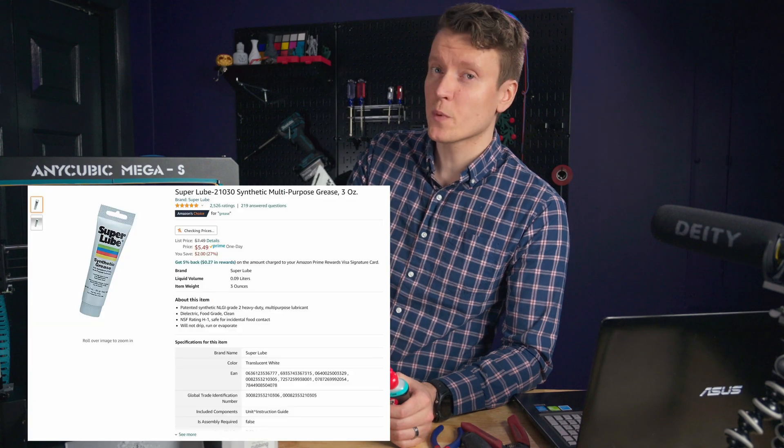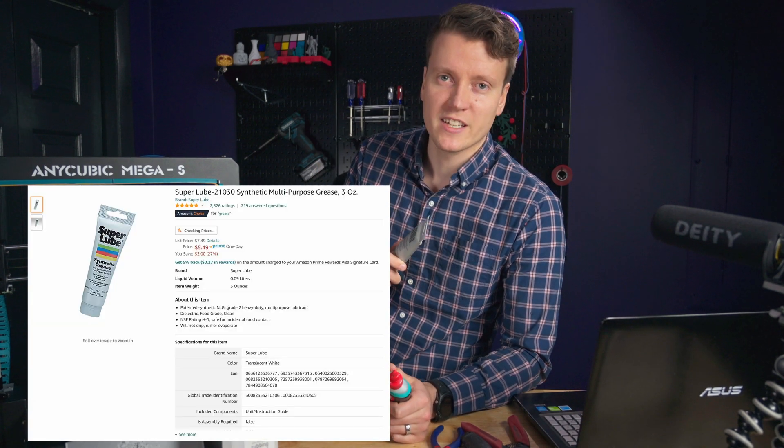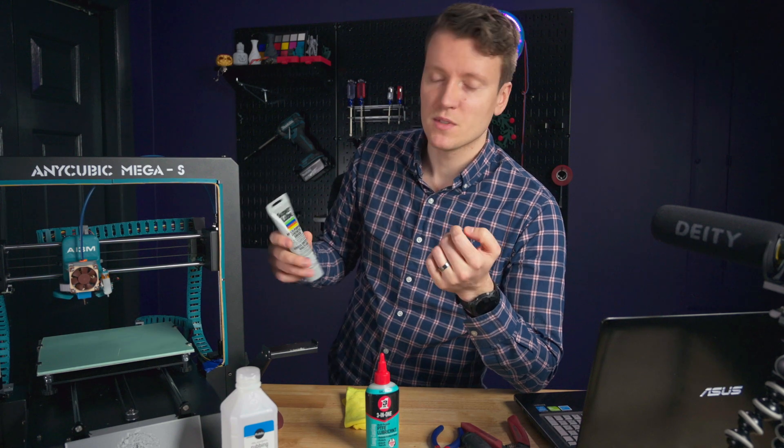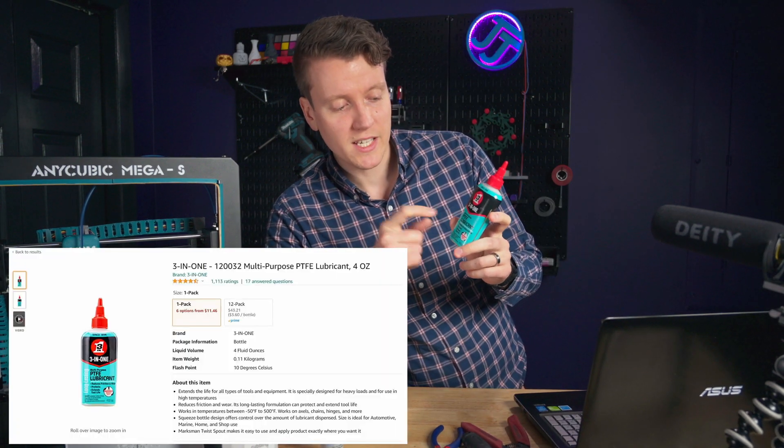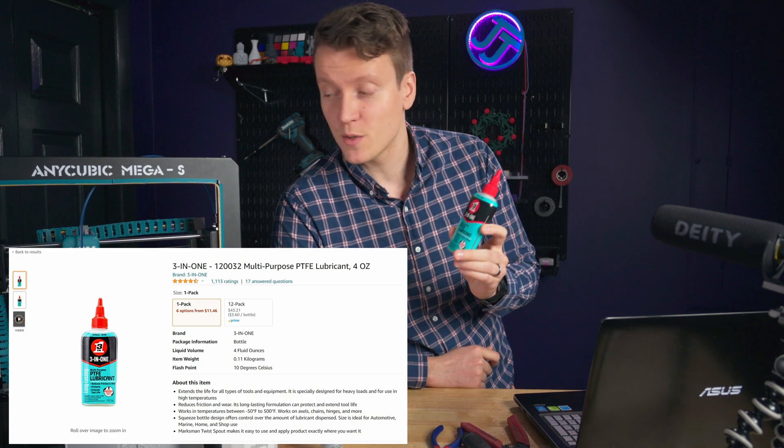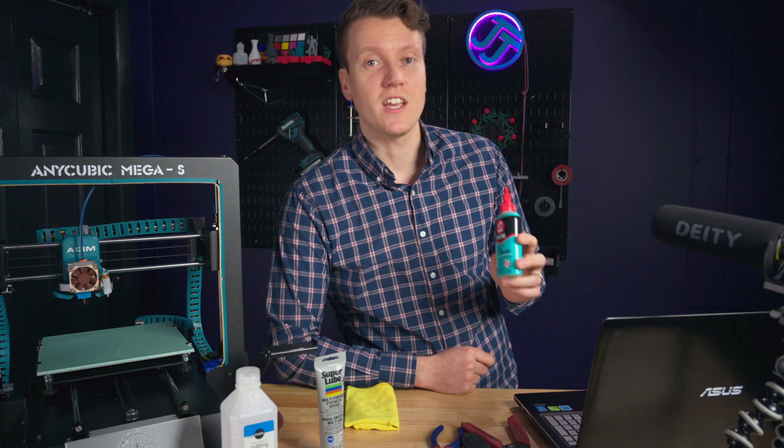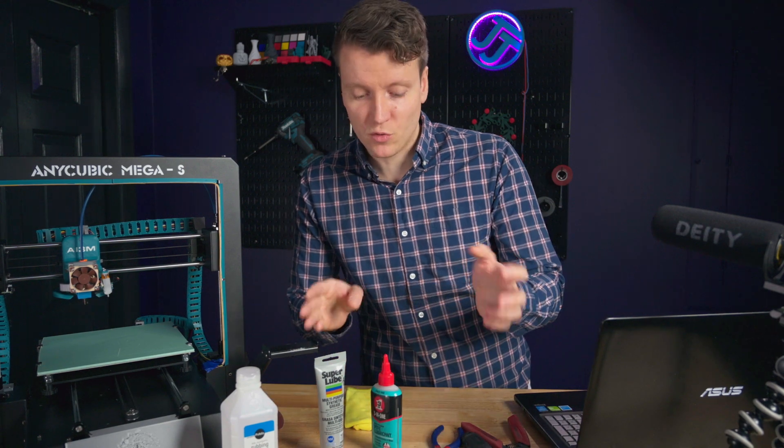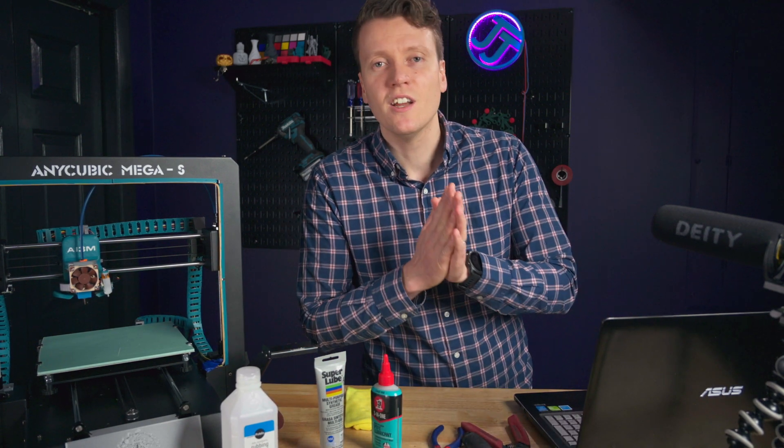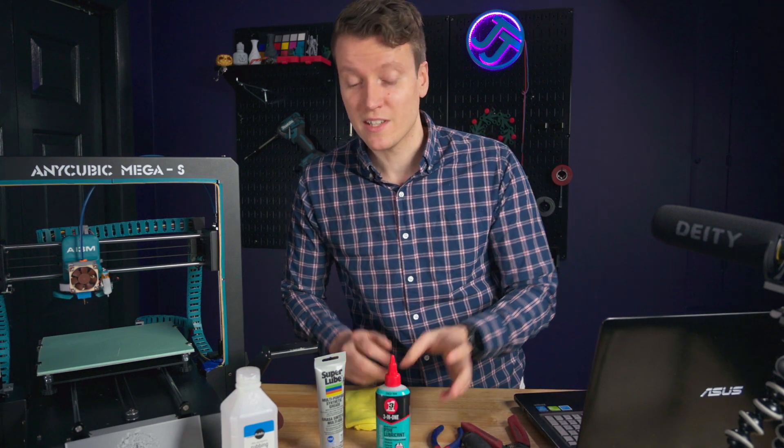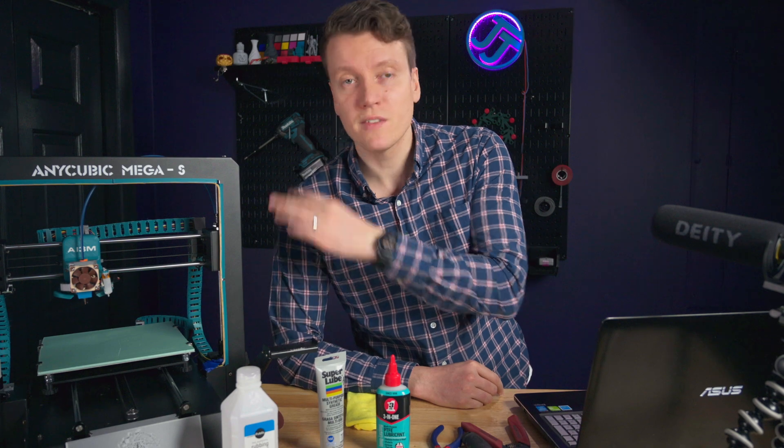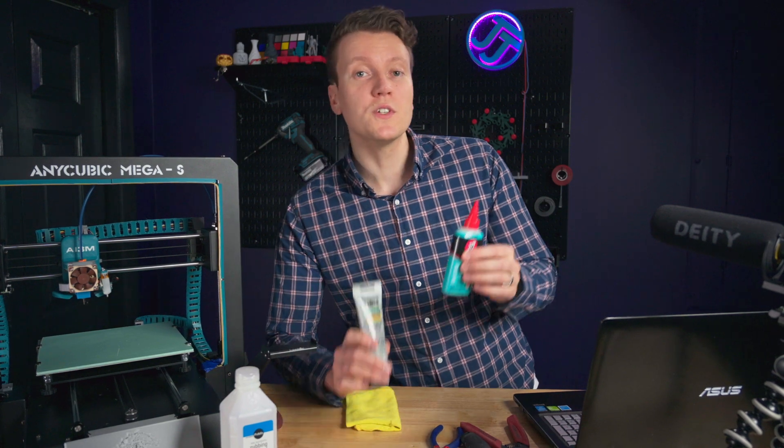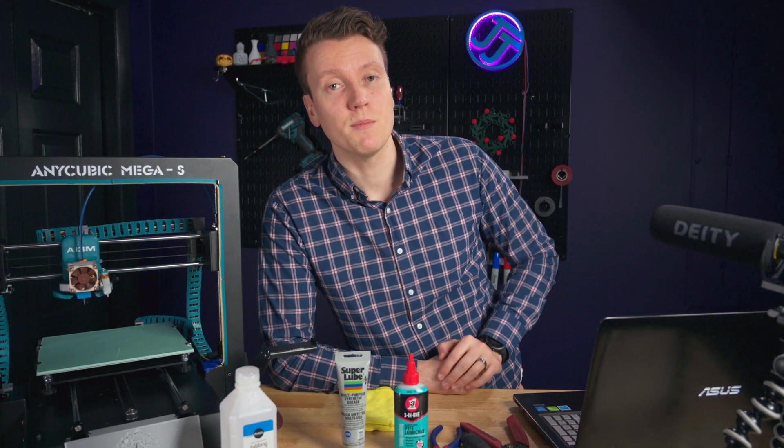The grease I use is called Super Lube, but when it takes off the cape, he just goes by Clark Kent. It's a multi-purpose synthetic grease with PTFE. It's just a good all-around grease you can use for a bunch of different systems. The oil that I use is a 3-in-1 with PTFE. It says 3-in-1, but I've only found two of those uses. I use it on a 3D printer and for a bike chain. If anyone else finds that mythical third use for it, let me know in the comments down below. But honestly, if you have a favorite grease or oil that you're already using on other machinery, you could probably use it for this.